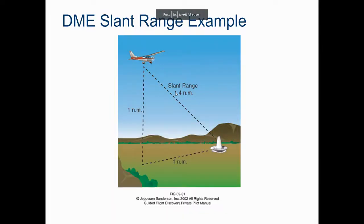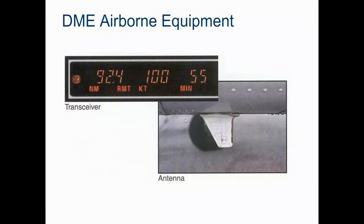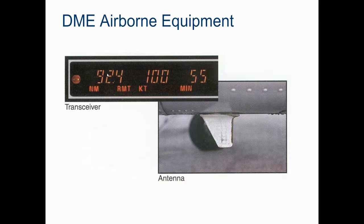Distance Measuring Equipment has an antenna below the aircraft to measure distance, and shows in the transceiver how far you are away - this one shows 92.4 nautical miles. You look for that particular gauge in the cockpit as well. And that's it for VOR and DME.